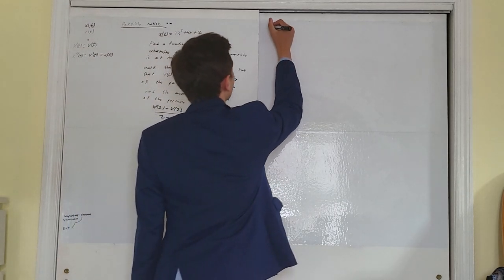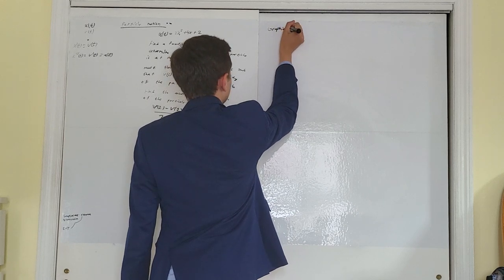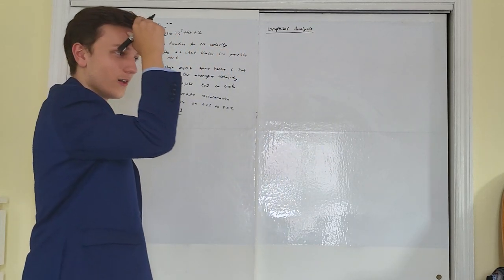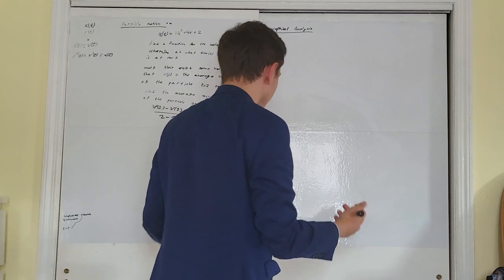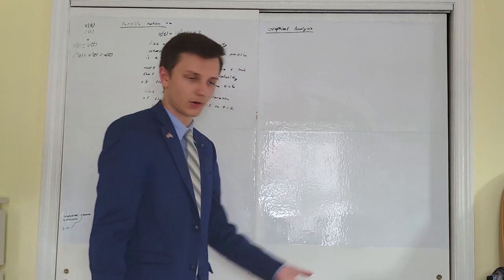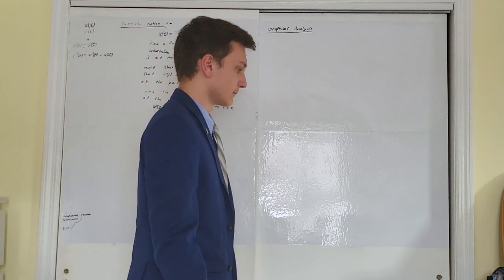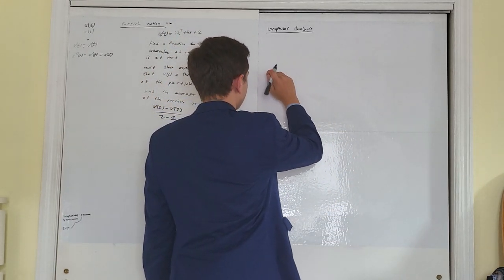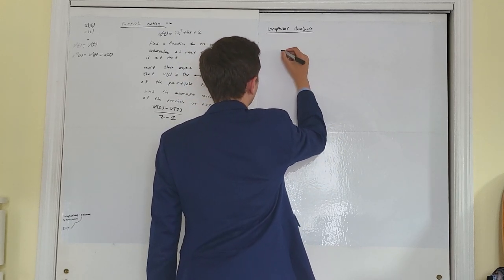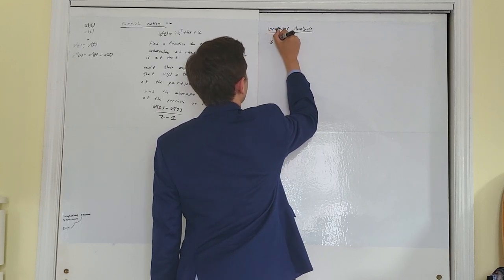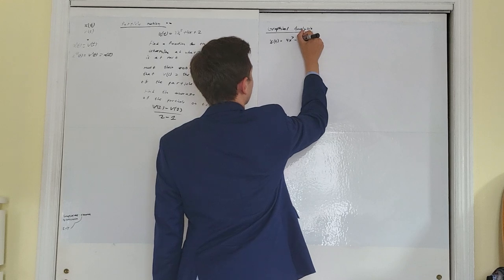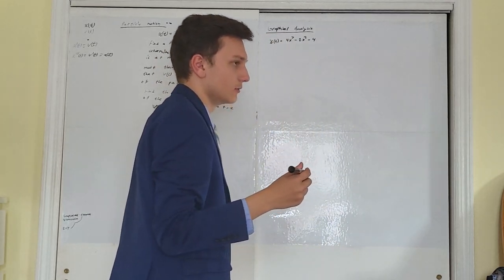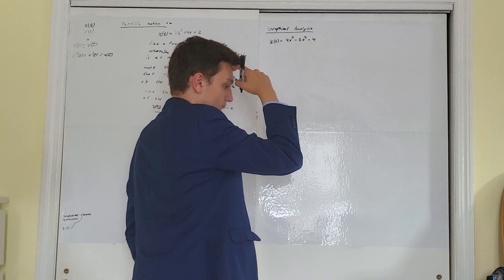Graphical analysis is going to be the topic that kind of defines all of derivatives and integrals. It's not really word problems like we saw with related rates — it's more just find this, find that. In graphical analysis, they give you a function, x of t equals 4x cubed minus 2x squared minus 4, and they're going to ask you a bunch of different questions about it.